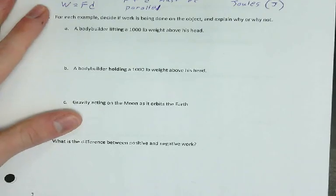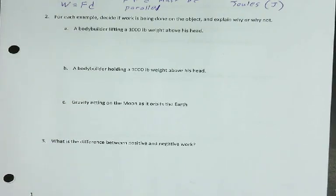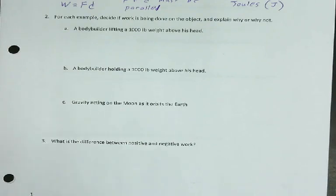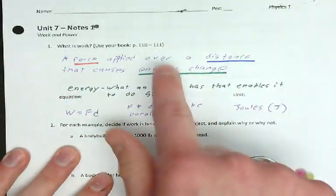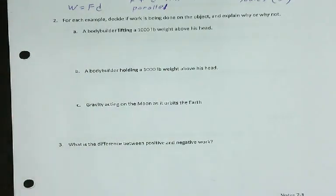I want you to try number two on your own. For each example, decide if work is being done on the object and explain why or why not. The examples are: a bodybuilder lifting a thousand pounds above his head, a bodybuilder holding a thousand pounds above his head, and gravity acting on the moon as it orbits the earth. Remember, work has to be a force, has to move a distance, and has to cause an energy change.